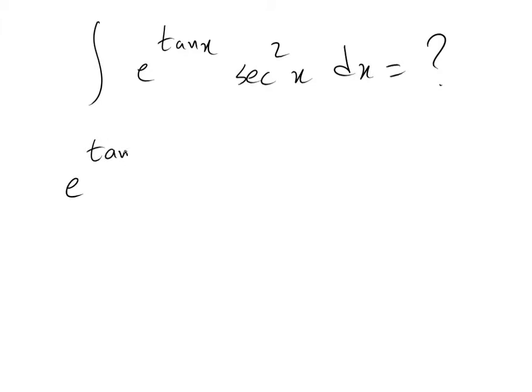If you write e with the power of tangent x is equal to u, and if you calculate the derivative of each side of this equation, you get the derivative of tangent x is equal to second square x times e with the power of tangent x dx will be equal to du.